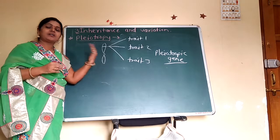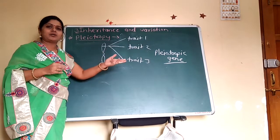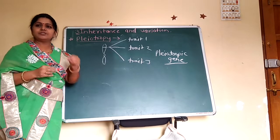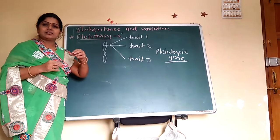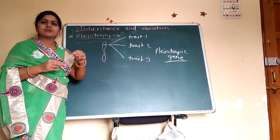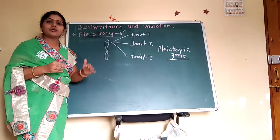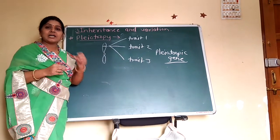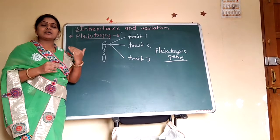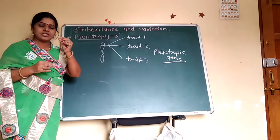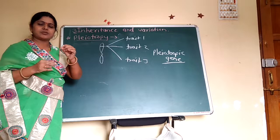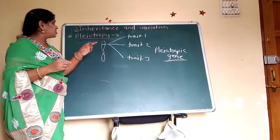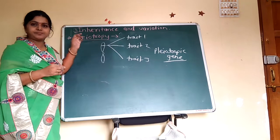For example, in Drosophila, the gene of wings controls the size of wings, but that same gene also controls the eye color and the tarsal structure. So one gene controls various types of characters or multiple traits. That gene is called a pleiotropic gene.